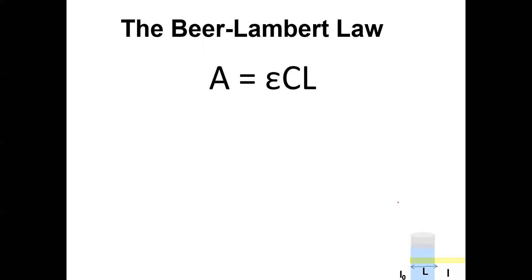With the Beer-Lambert Law, we have a direct relationship between absorbance and concentration. As I increase the concentration — notice there is no minus sign — I increase the absorbance. As I decrease the concentration, I decrease the absorbance. Epsilon and L are constants.